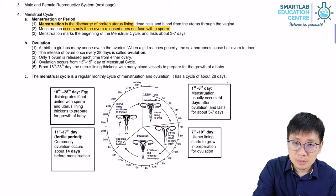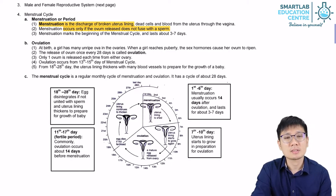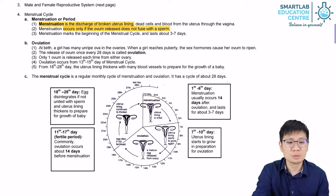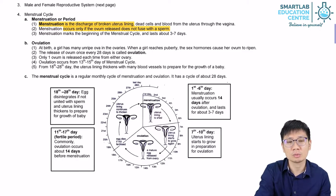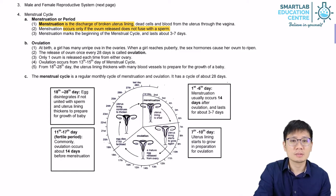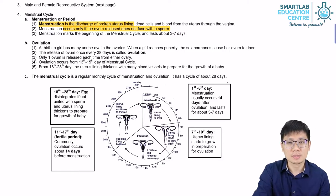What if there was fertilization? If there is fertilization, there would not be menstruation, because the uterine lining will remain intact in order to support the implantation of the fertilized egg into the uterine lining, developing into a fetus.